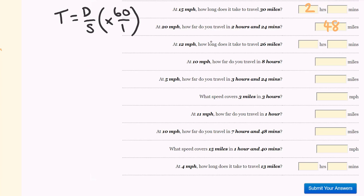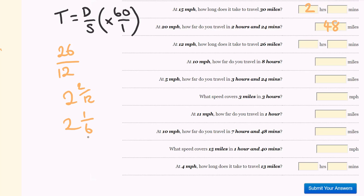At 12 miles per hour, how long does it take to go 26 miles? This is a time question: distance divided by speed. 26 divided by 12 — you get 2 and 2 over 12, which is 2 and 1 sixth. What's 1 sixth of 60 minutes? It's 10 minutes. So we have 2 hours and 10 minutes.